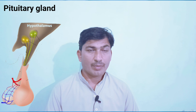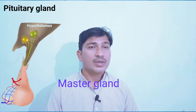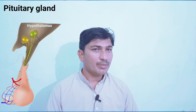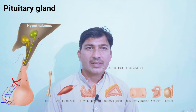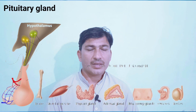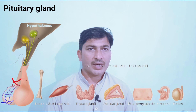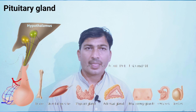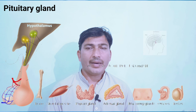The pituitary gland is also known as the master gland of the body, because it releases special hormones that start or activate other glands of the body. It activates the thyroid gland, the adrenal gland, our gonads, and various other tissues and cells inside our body. Therefore, it is called the master gland of the body.